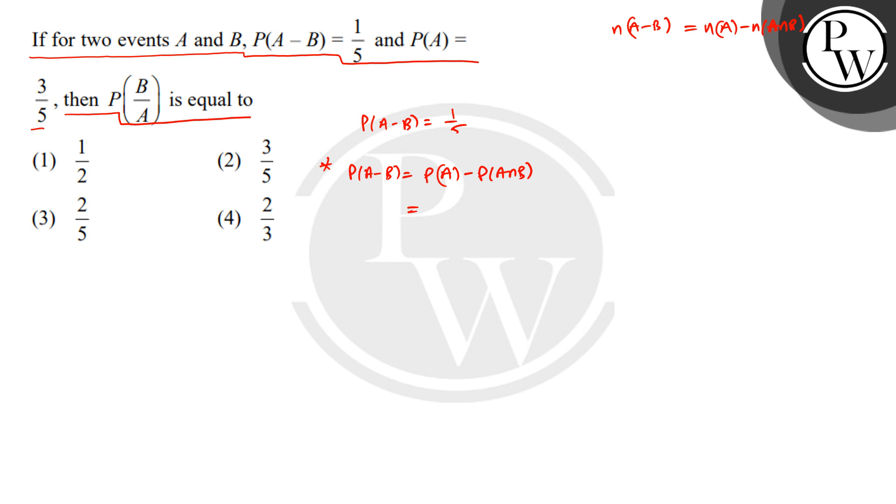So the probability of A is known as 3 by 5. Probability of A minus B is known, this is 1 upon 5. So, minus probability of A intersection B. The probability of A intersection B is 3 by 5 minus 1 upon 5, which is 2 upon 5.